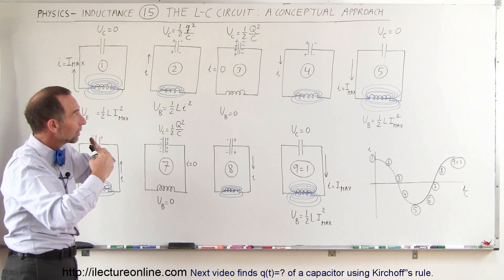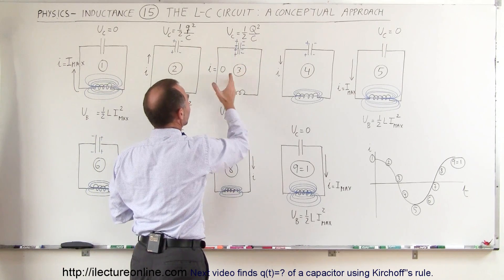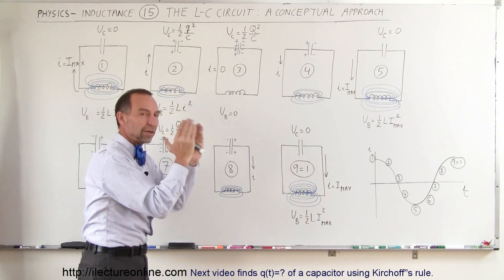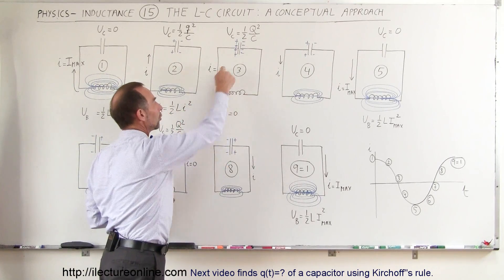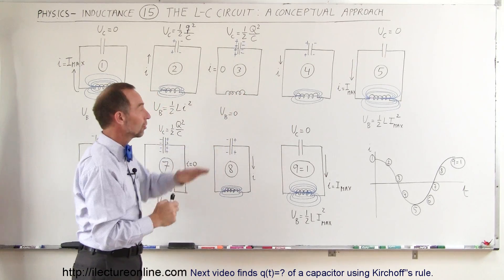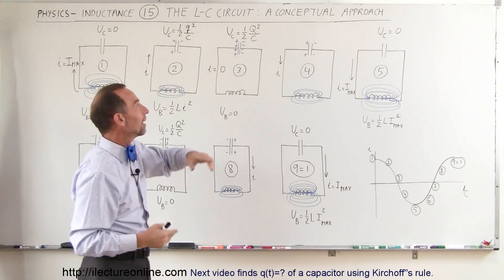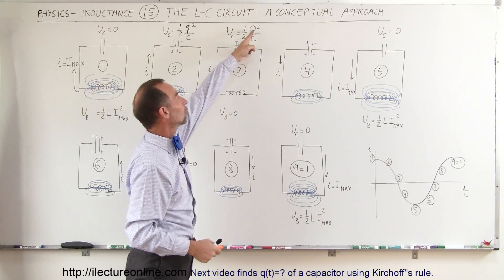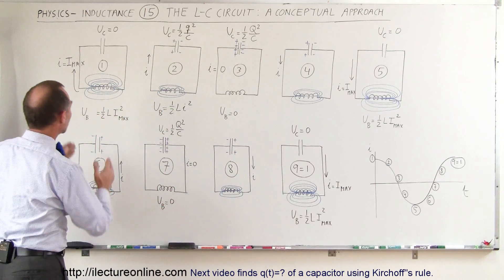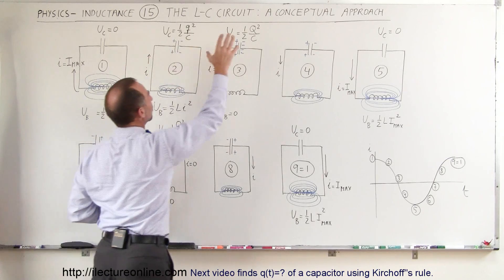Eventually the capacitor will get fully charged — maximum charge will build up on the capacitor. At that point the current will stop. Since there's no current flowing in the circuit, there's no magnetic field in the inductor, so the energy in the inductor is zero. The energy in the capacitor has reached its maximum value: one-half times the total charge squared divided by the capacitance. The exact same amount of energy that was stored on the inductor will now be stored on the capacitor.